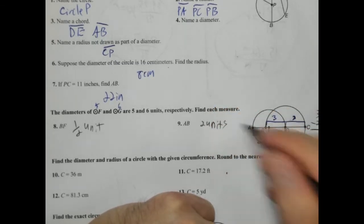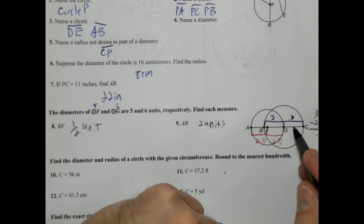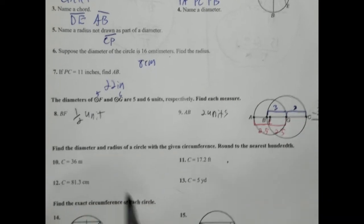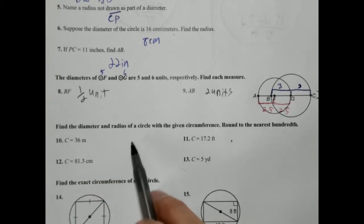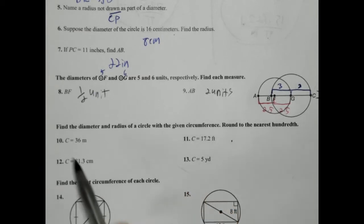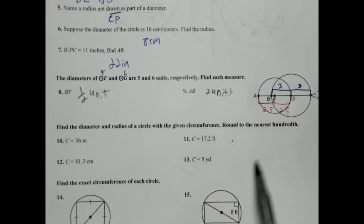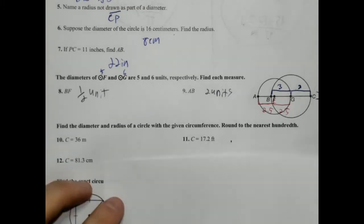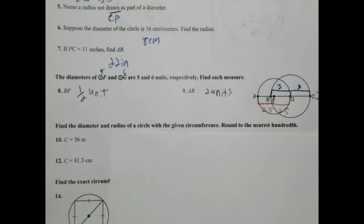Interesting problem. That's an interesting one. I think drawing in the radii actually helped quite a bit for that one. Okay. The diameter and radius of a circle with a given circumference. Round to the nearest hundredth. So we're going to need another piece of paper because there's not enough room.